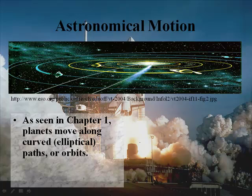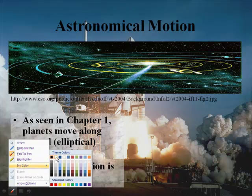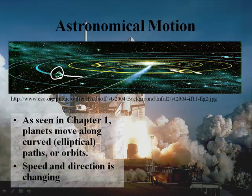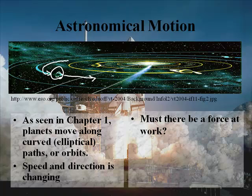As we saw in chapter one, planets move along curved or elliptical paths — orbits. That was known. The problem was that the speed and direction were changing. If I'm looking at the orbits of my planets in the picture above, here's Saturn — he's moving, but he's always changing the shape of his movement because it's curved, not going in a straight line. So what's going on? Why do they move in those crazy curved manners? Must there be a force at work? The scientists began to say there must be some force at work. What is that force?